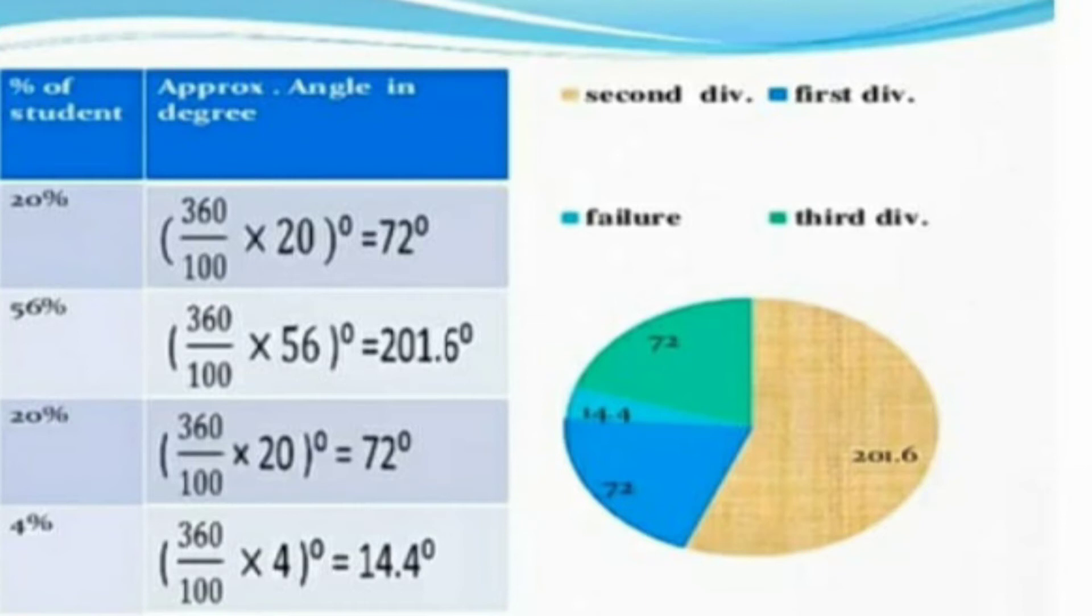Next is second class. Second class has 201.6 degree angle, and for second class they have given yellow color.